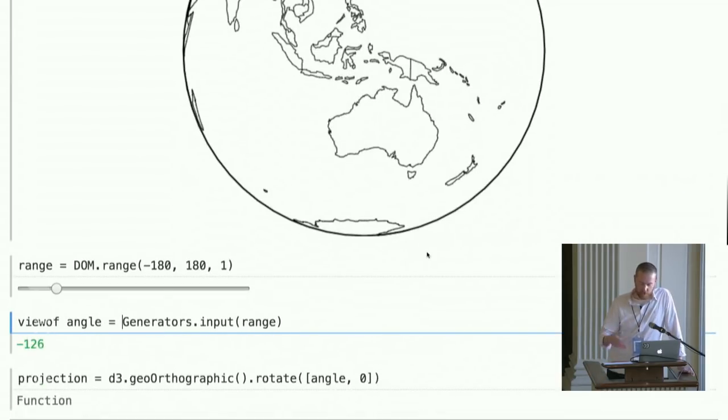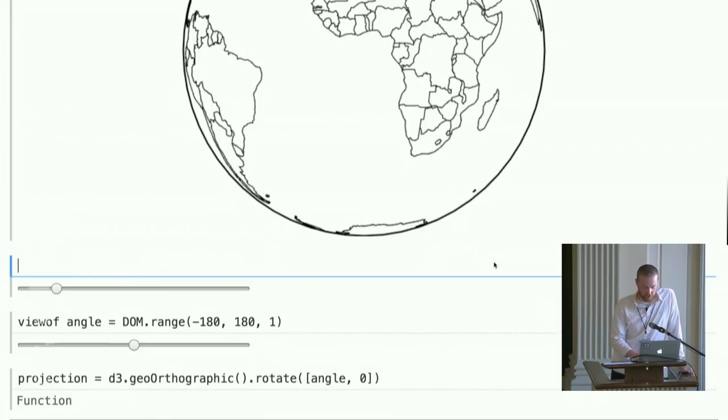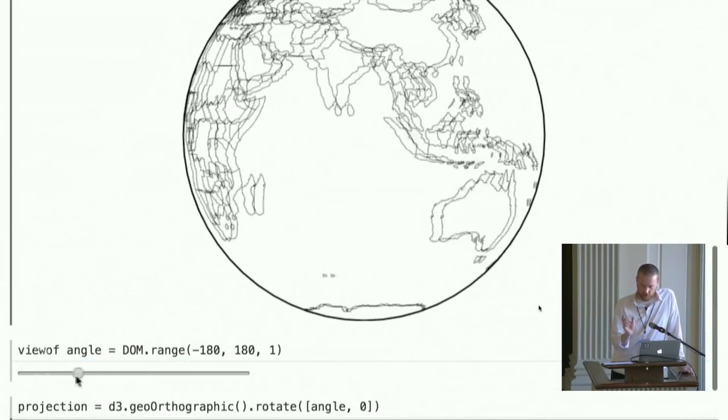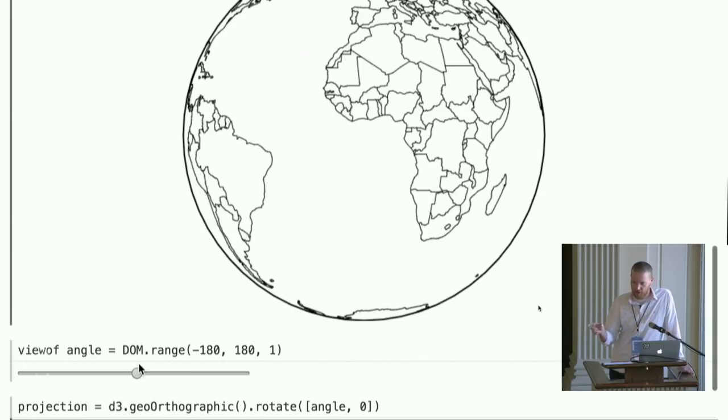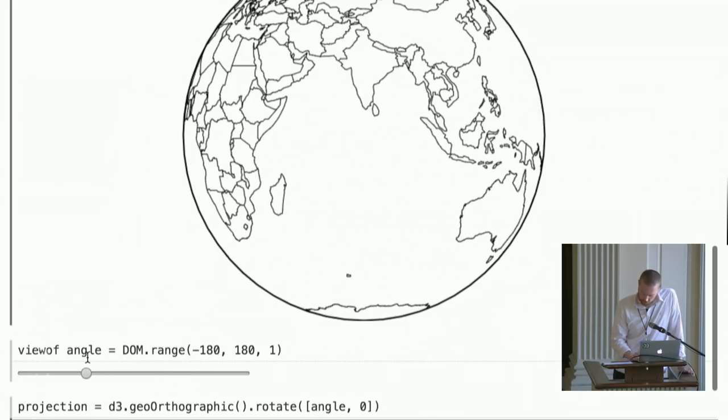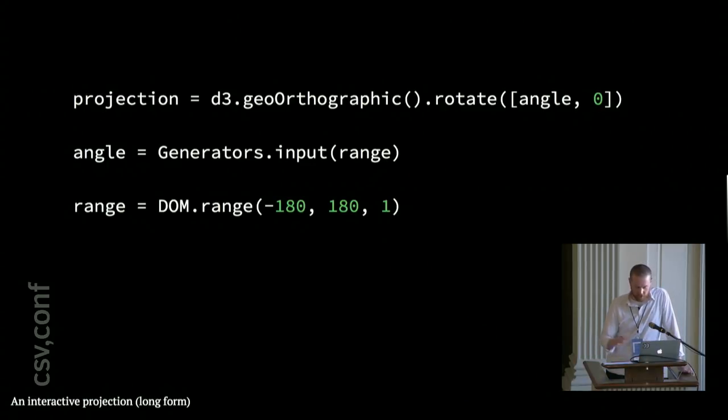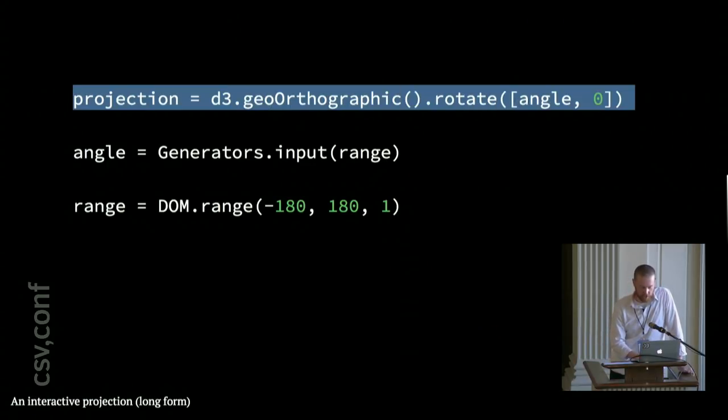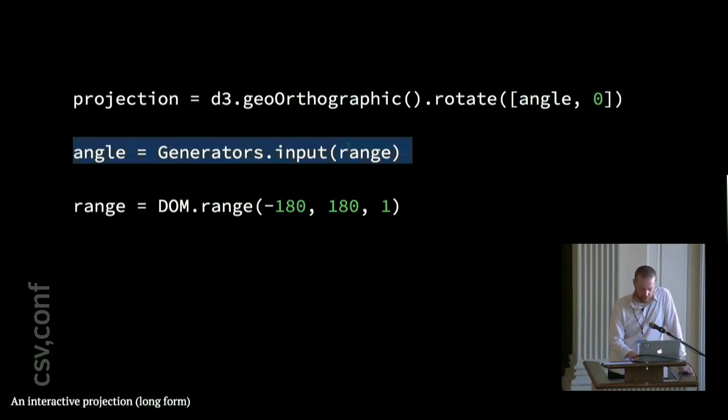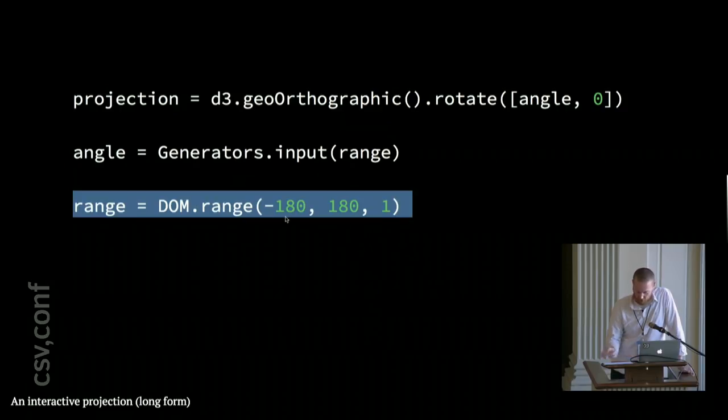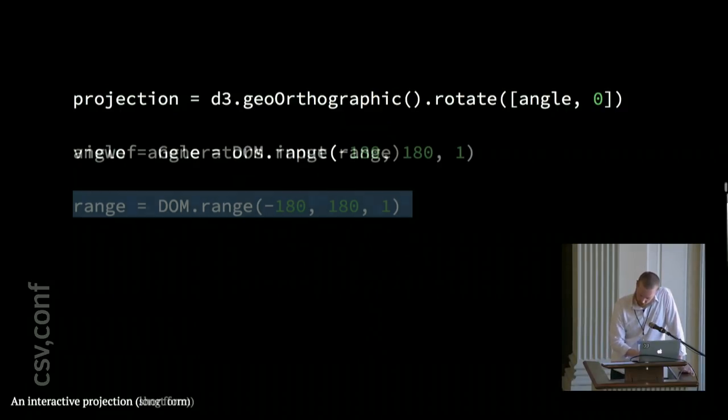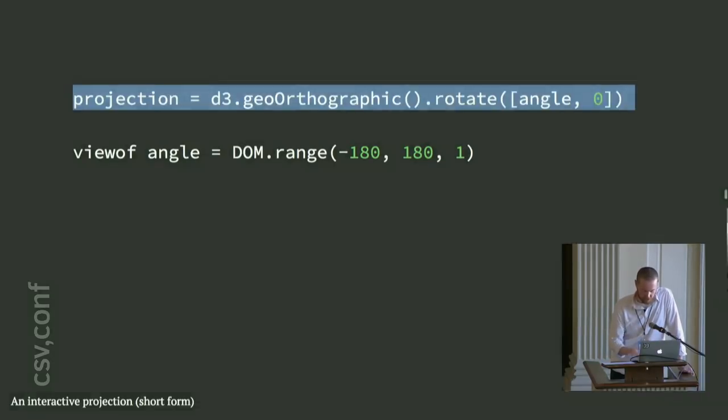Now, because this is a very sort of common case where you're defining a user interface and you want that to drive something in your code, there's a viewof operator which does exactly the things that I just showed you, but it does it sort of within a single definition. So, there's the input slider that you're declaring here. That's the user interface or the graphical interface. And then there's the value of that, which is the programming interface. So, that's the angle that the code sees to drive the projection. Okay, so, again, this is the code. So, this is sort of like a long form where I'm declaring my projection and its rotation takes an angle. That angle is derived from this range input. And the range input, it just goes from minus 180 to plus 180. And this is the shorthand form using the viewof operator.